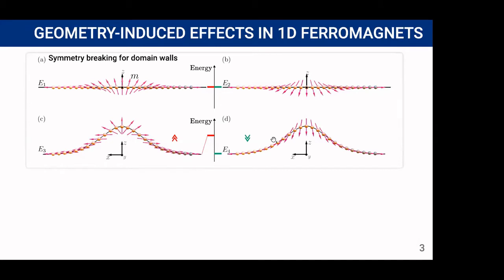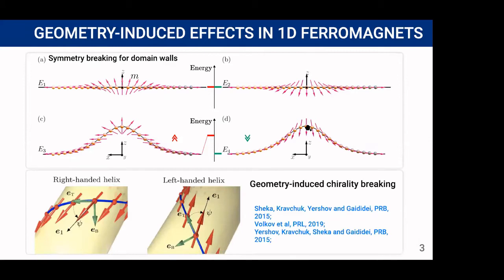But if we bend the wire this symmetry is broken and the domain wall on the right panel is lower energy than that on the left panel. Moreover, additional stabilization factor appears as the domain wall is pinned in the point of maximum curvature.